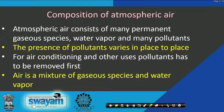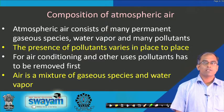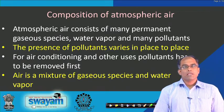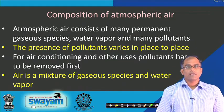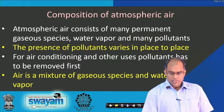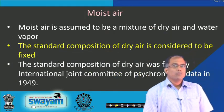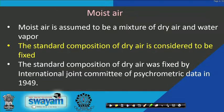Composition of atmospheric air: atmospheric air consists of many permanent gases, water vapour, and many pollutants. The presence of pollutants varies from place to place. For air conditioning and other uses, pollutants have to be removed first and the processed air utilized. Hence, air may be considered as a mixture of gaseous species and water vapour, generally known as moist air. Moist air may be assumed to be a mixture of dry air and water vapour.